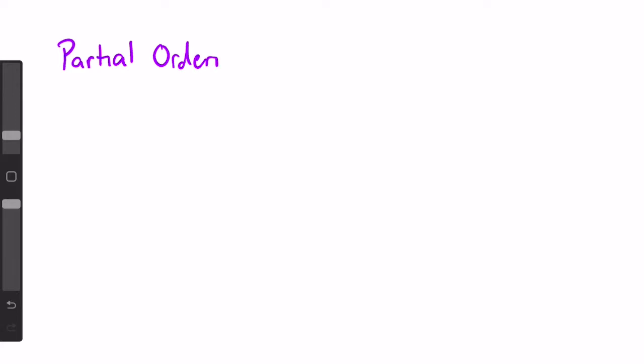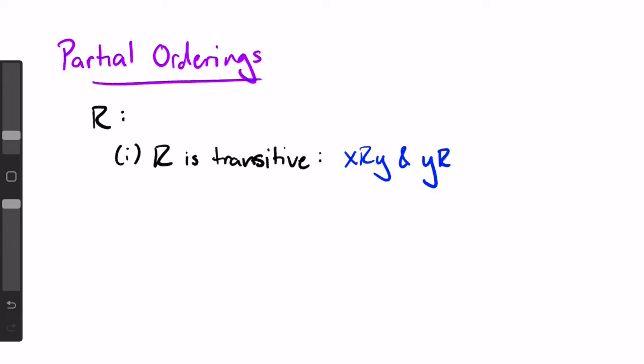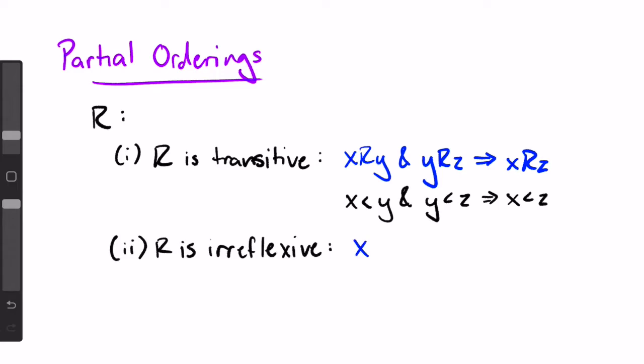Let's start with partial orderings. A partial ordering is a relation R meeting the following two conditions. First, R is a transitive relation, so if X R Y and Y R Z, then it must be true that X R Z. An easier way to think about this might be if X is less than Y and Y is less than Z, then X is less than Z. And second, R is irreflexive, so it is never the case that X R X. Again, this translates to, it is never the case that X is less than X, which makes sense. We want X to be equal to X, not less than itself.